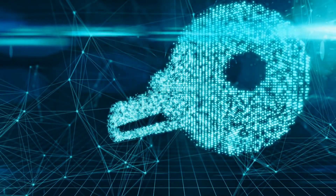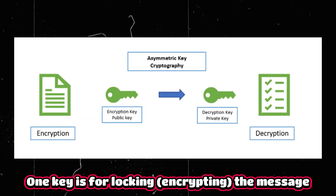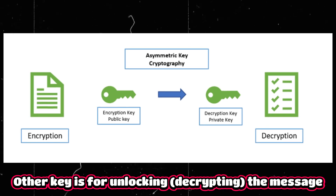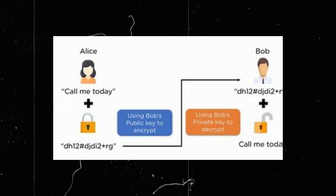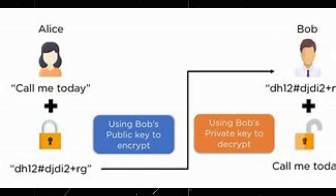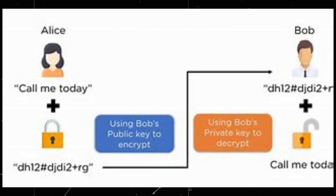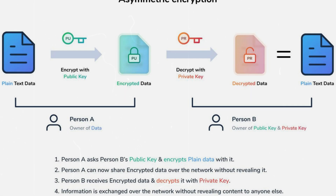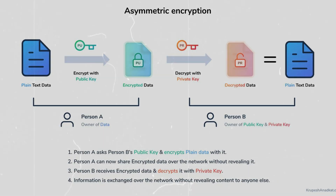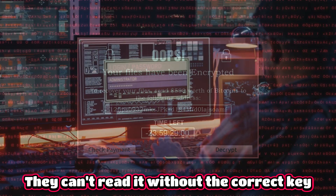Asymmetric encryption is a bit different. It's like having a special pair of keys — one key is for locking (encrypting the message) and the other key is for unlocking (decrypting the message). Let's say you have a special lock that only your friend's key can open. You use your friend's key to lock your message and send it to them. When they receive it, they use their special key to unlock and read the message. The important thing is that your friend's key can only unlock messages that were locked with their specific key. This way, even if someone intercepts the message, they can't read it without the correct key.